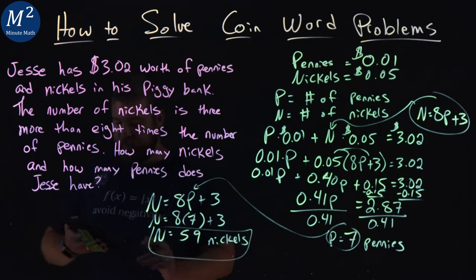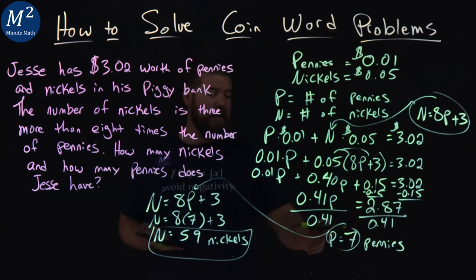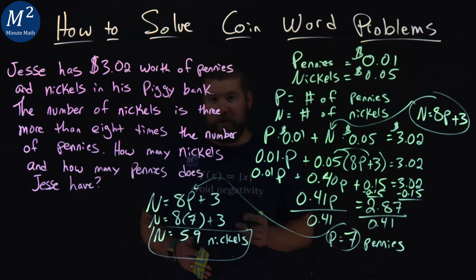59 nickels. So there we have it. Jesse has 7 pennies and 59 nickels.